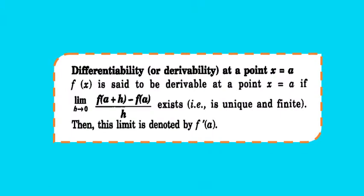We have learned about the limit of any function at a particular point. If we have a function f(x) and we have to check its derivability at the point a, it is said to be derivable at x = a if limit h tends to 0 of [f(a+h) - f(a)] / h exists — meaning it is unique, has a single value, and is finite. It is denoted by f'(a), the derivation of f(x) at x = a.